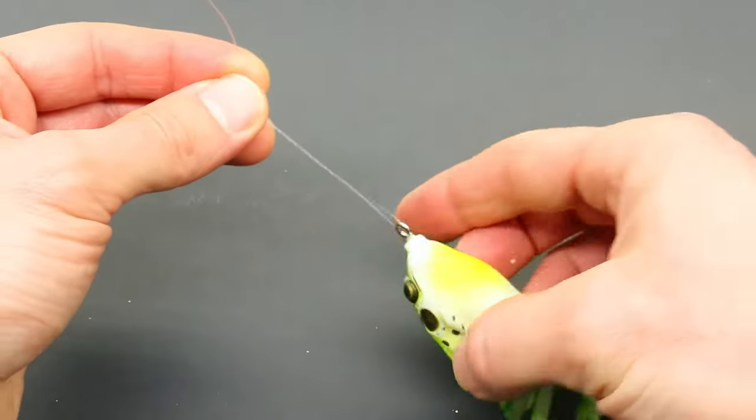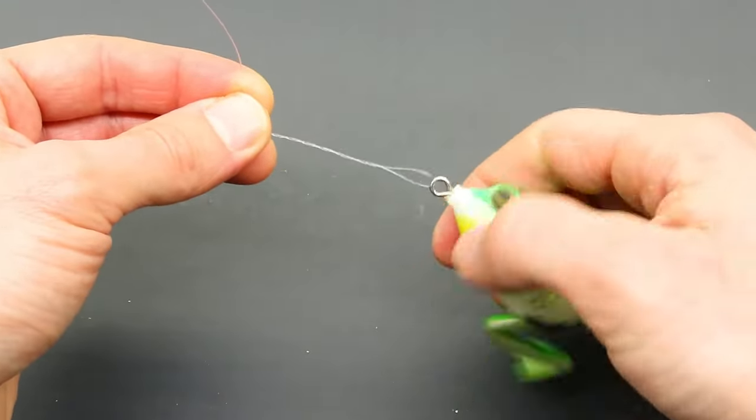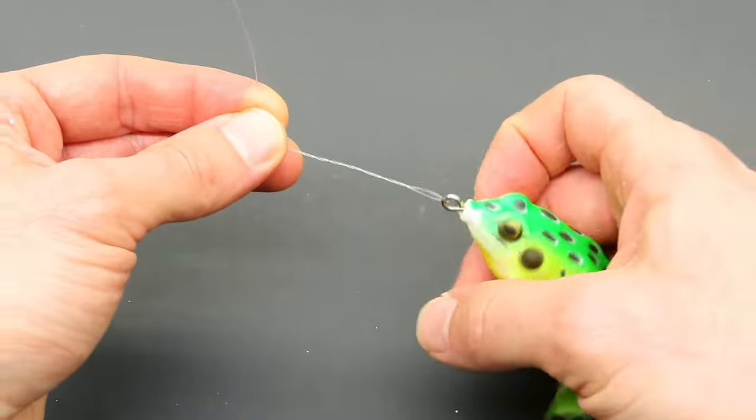You can also try just spinning the lure. That's what most anglers do after they tie this knot a few times. It is faster to spin the lure.